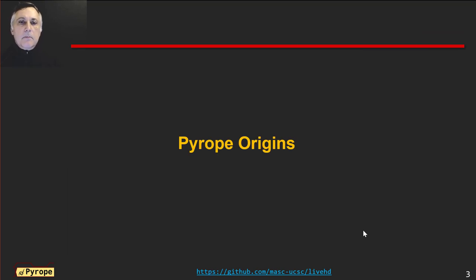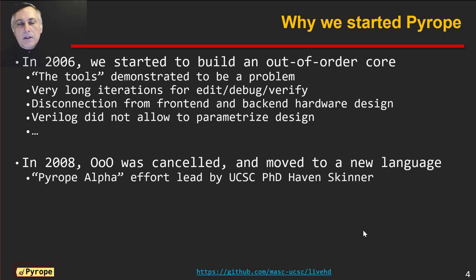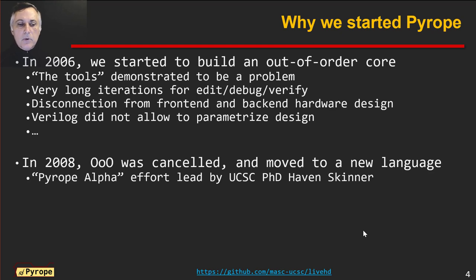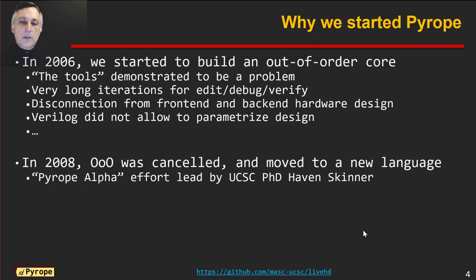So let's start with the origins of Pyrope. Why did we start Pyrope? In 2006, we started to build an out-of-order core and we found that the problem was with the tools. We had very long iterations for edit, back, verify. We found a disconnect within the design and verification backend. Many times we had to redesign the same block three times. We couldn't reach the timing we wanted, and it was very hard to parameterize the design. As a result, in 2008 we cancelled the out-of-order core and moved to a new language. Pyrope Alpha was born in 2008, led by PhD student Heaven Skimmer.